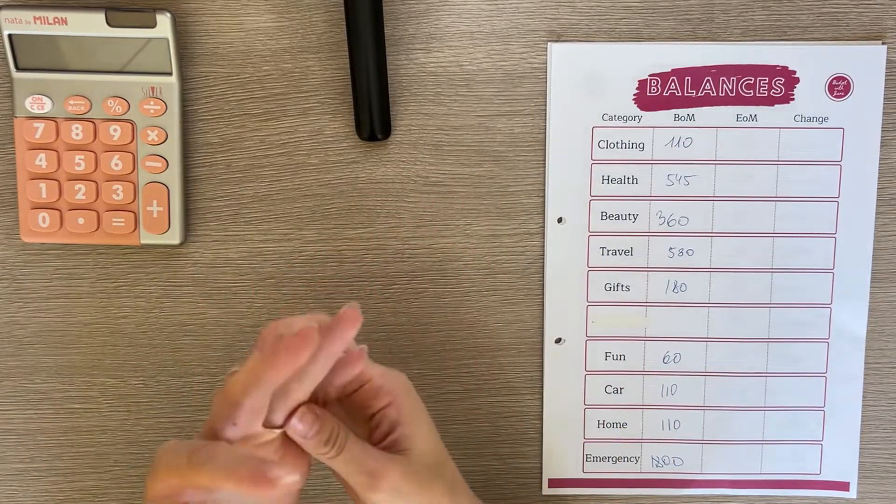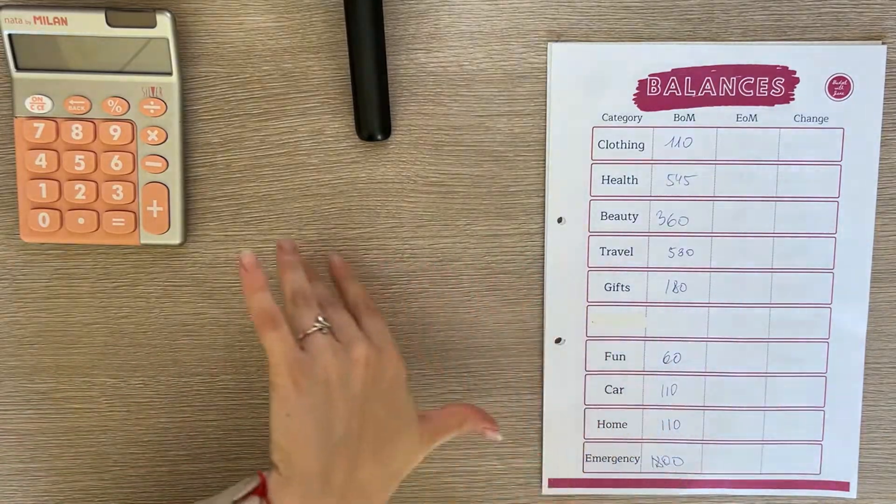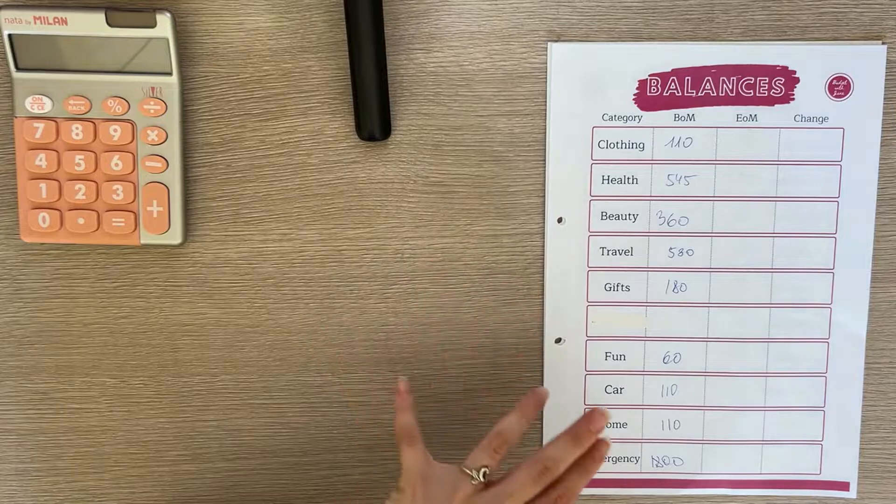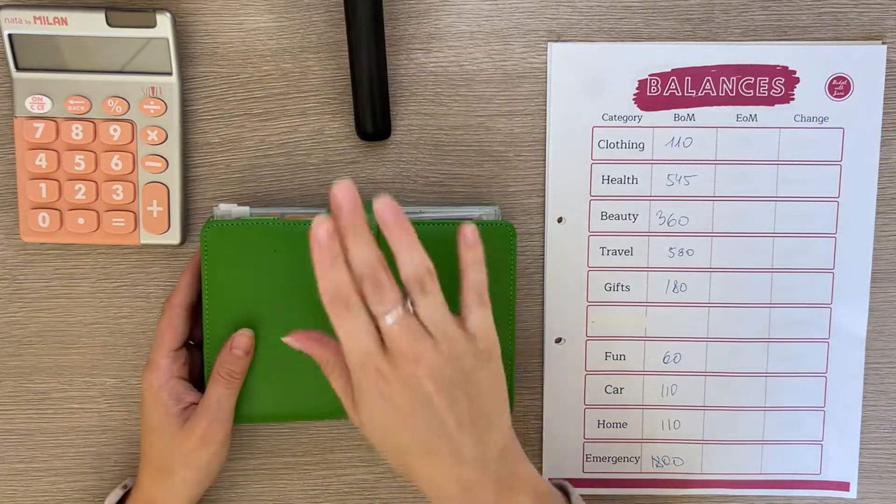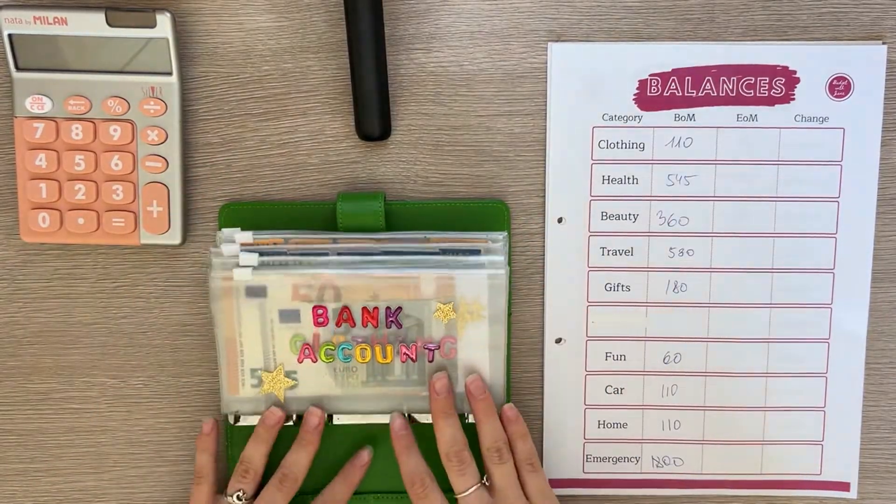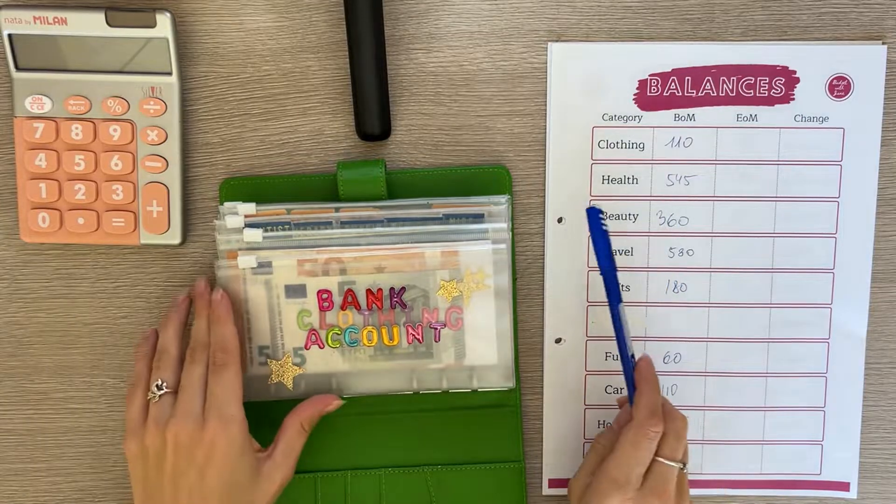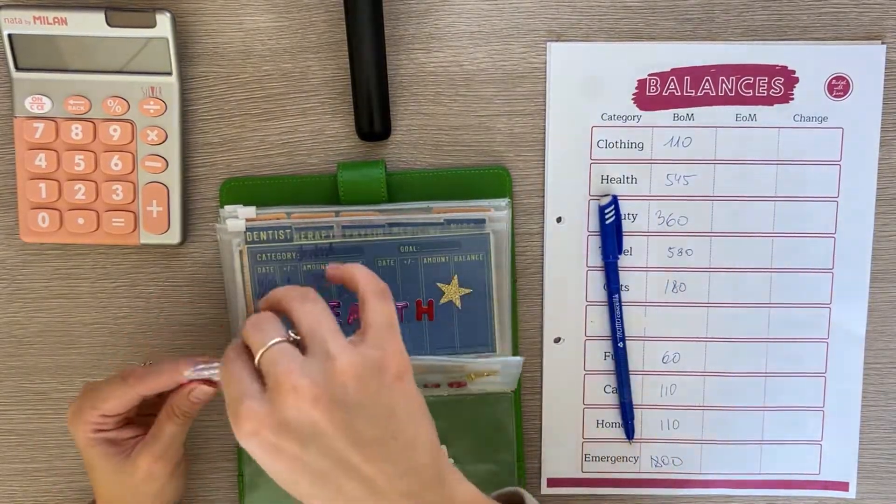Let's start with my usual part which is balances. At the end of the month I count all the balances in all of my binders and we see what the progress was, what was the change, and then we also count the total.